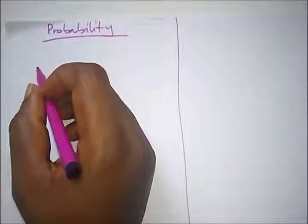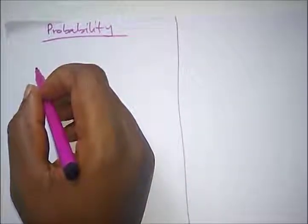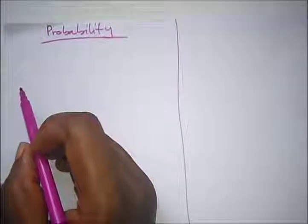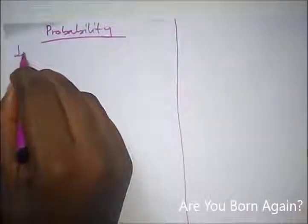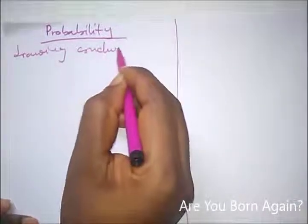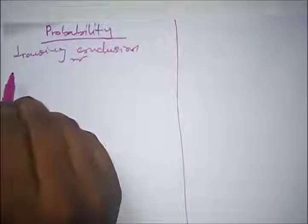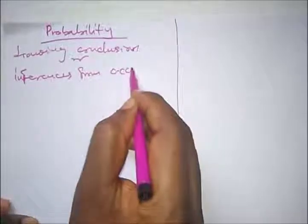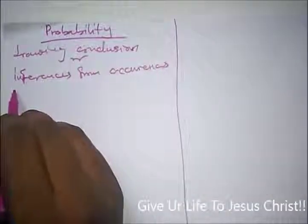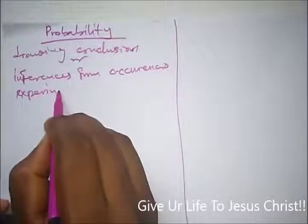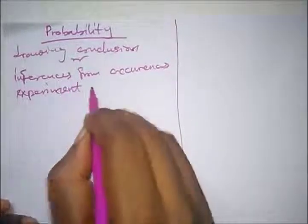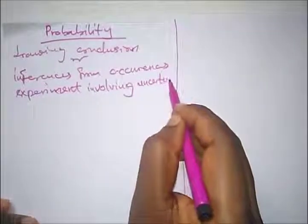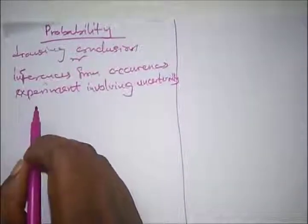Hello viewers, welcome to Destined to Win Tutorials. Today we're going to be treating probability. Probability is a branch of mathematical statistics basically concerned with drawing conclusions or inferences from occurrences or experiments involving uncertainties — for example, shooting a missile and determining if it's going to fail or succeed.